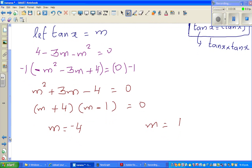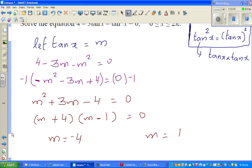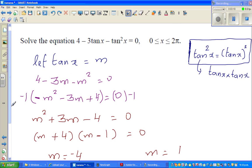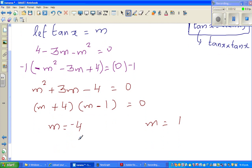Now, we have to wake up and say, well, what's m? m is tan x. So you've got two equations now. So tan x is equal to negative 4 or tan x is equal to 1.